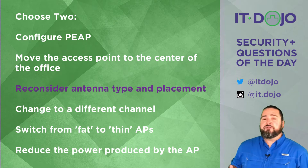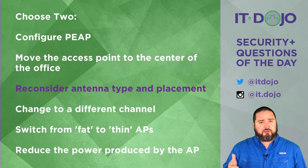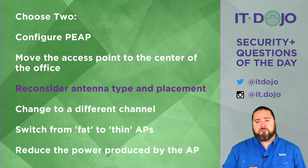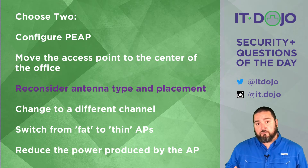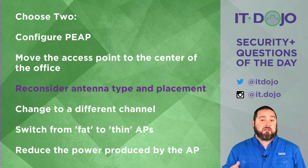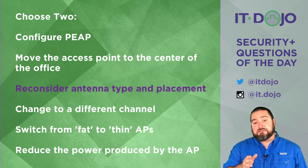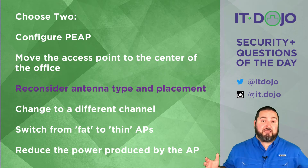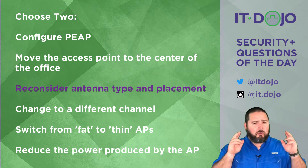The next item: move to a different channel. No. In the 2.4 GHz or 5 GHz frequency range, the channel you're on is really associated with how much interference there is — particularly in a multi-tenant office building with competing sources of radio energy. Changing channels can help reduce interference from those competing sources, but it is not going to do much to control your RF propagation pattern. Switching to a different channel is not the right answer here.